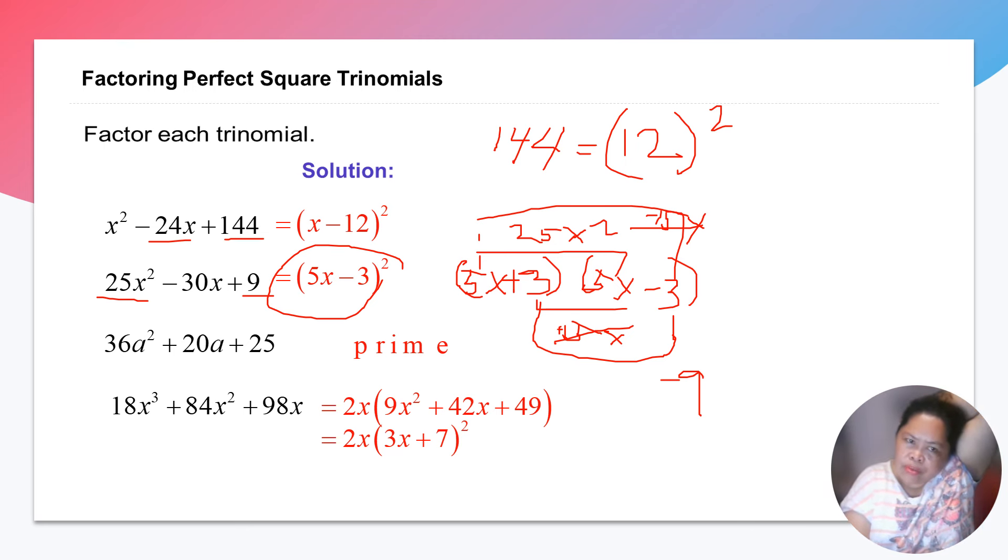For 36a squared plus 20a plus 25, 36 is square, but 25 it's prime. So it's prime. So how? Why? Why? It's prime. Because if we are going to examine this one, 36, the factors are 6 squared. And 25 is 5 squared. But 5 times 5 times 2, 5 times 5 is 30. And we get only here 20. So the result is prime.